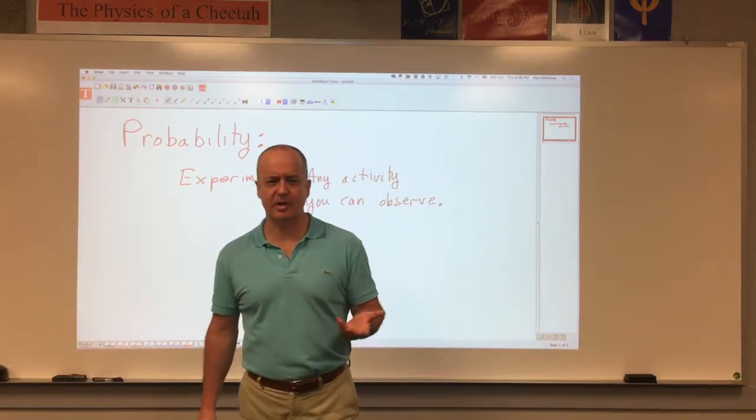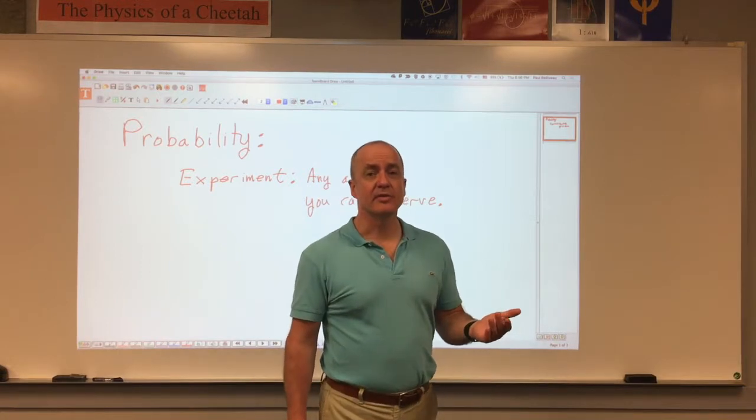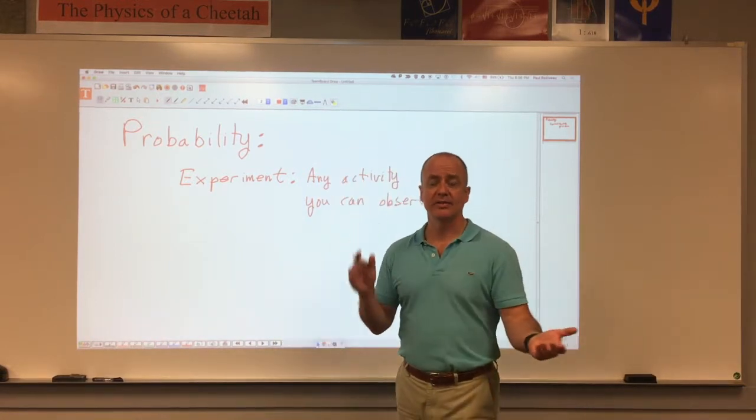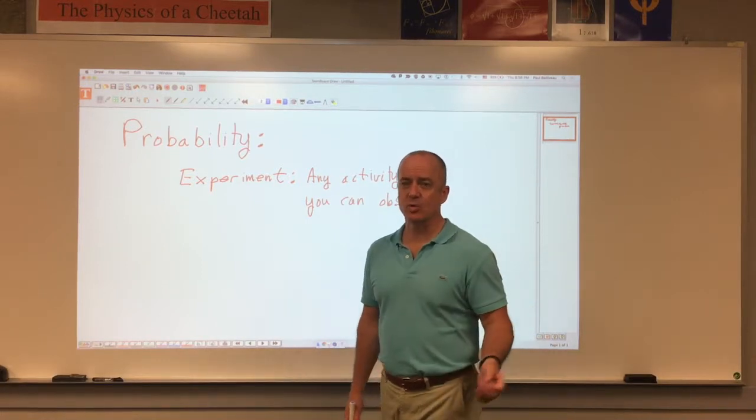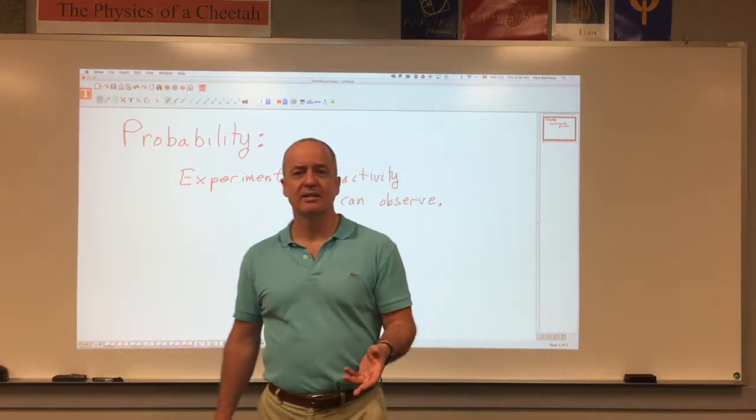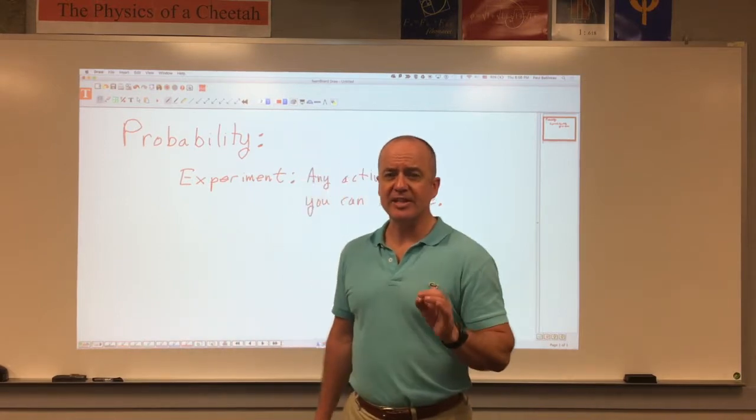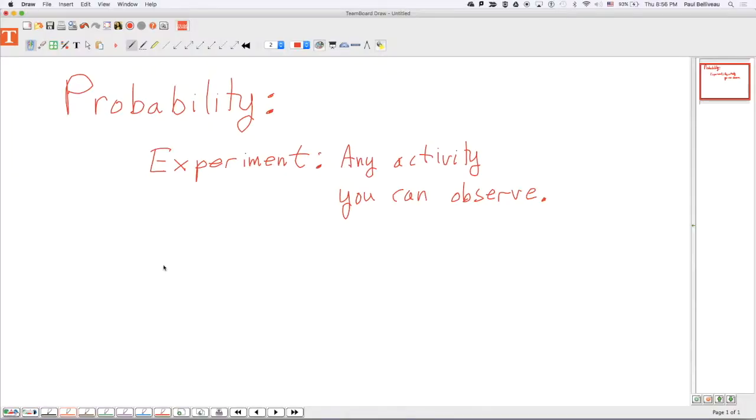So, you have an experiment. How many things can happen in your experiment? Well, that depends. If your experiment is as simple as flipping a coin, there are two things that can happen. If your experiment is rolling a six-sided die, there are six things that can happen. The things that can happen in your experiment are called the sample space, and the sample space is every possible outcome of your experiment.